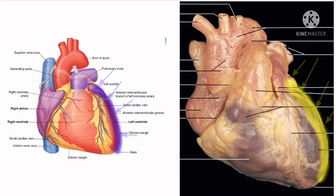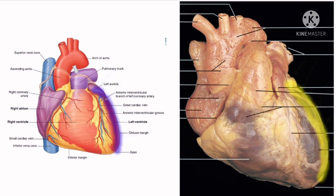The left surface is formed mainly by the left ventricle and partly by the left atrium and the auricle. It is directed upward, backwards, and towards the left.